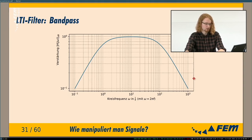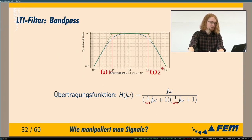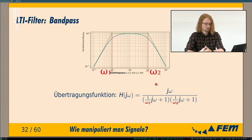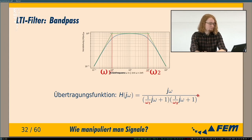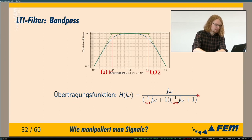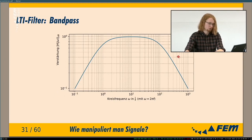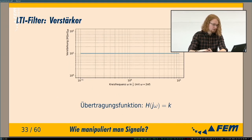A band pass filter attenuates both low and high frequencies and lets the frequencies in between pass. It has two critical frequencies, omega_1 and omega_2. Its transfer function is j·omega / ((j·omega/omega_1 + 1) · (j·omega/omega_2 + 1)). You can think of it as a high pass and a low pass placed one after the other. In reality with actual audio signals these frequencies would be higher, but here it's about the concept.